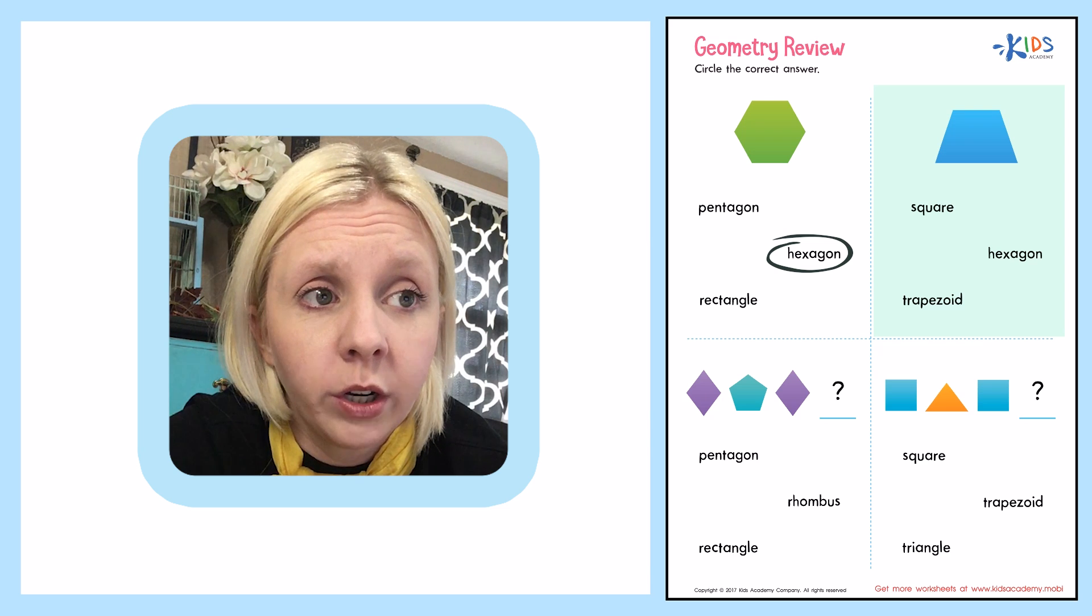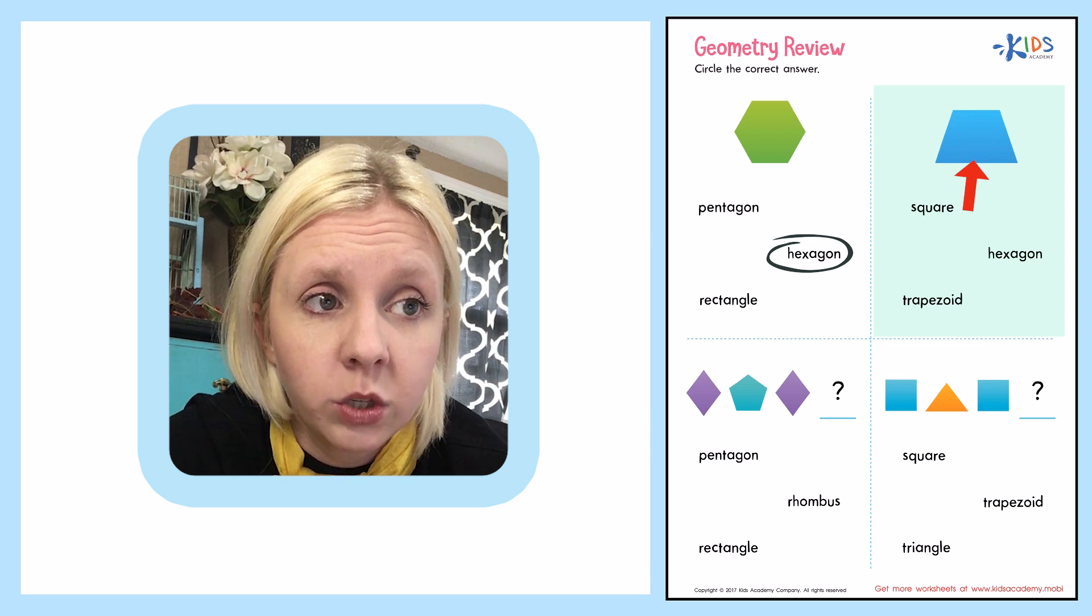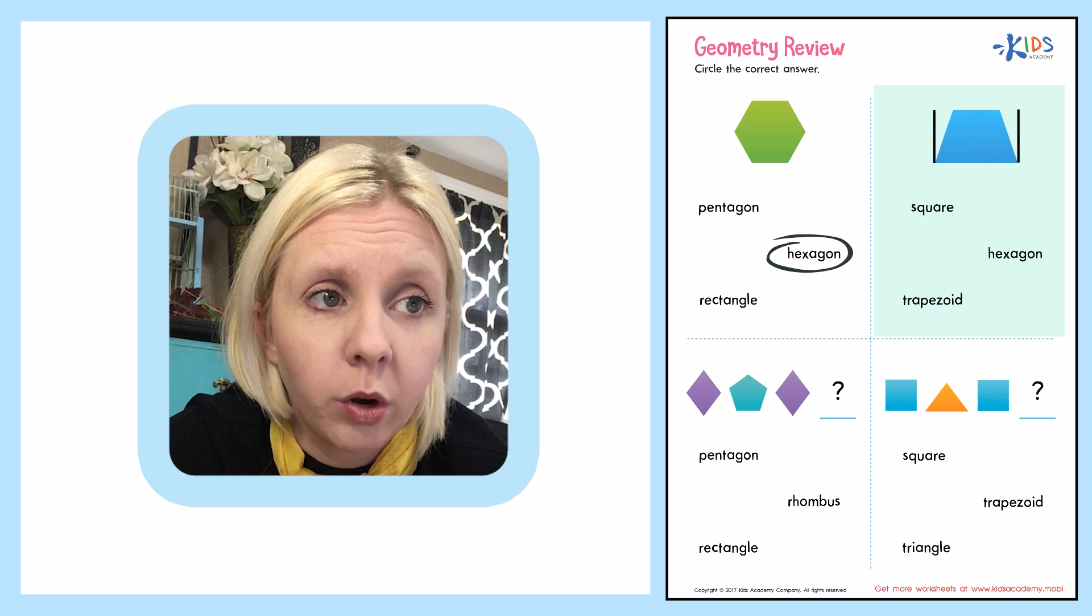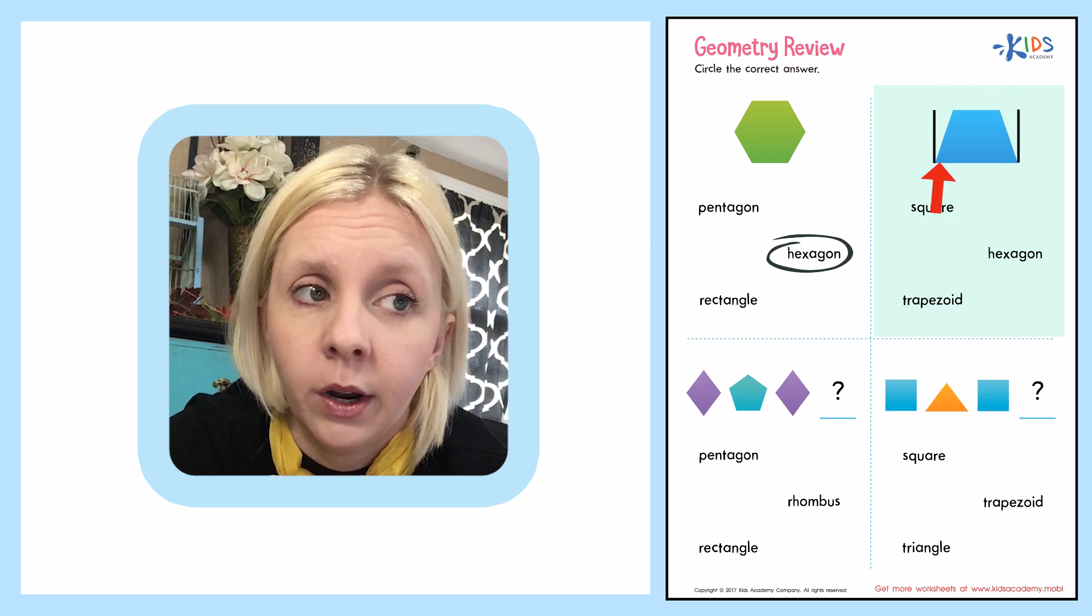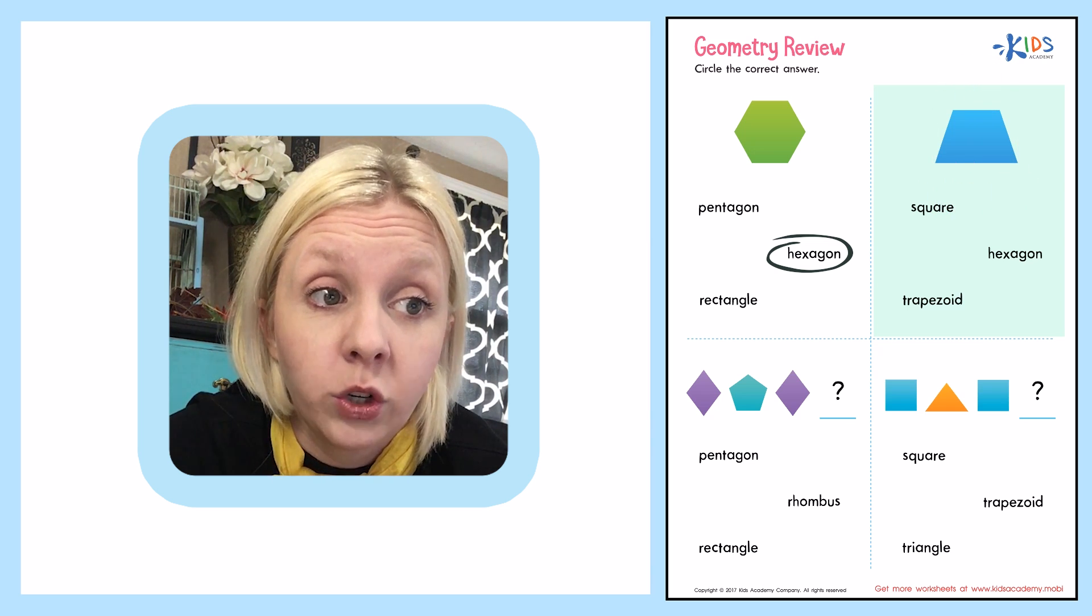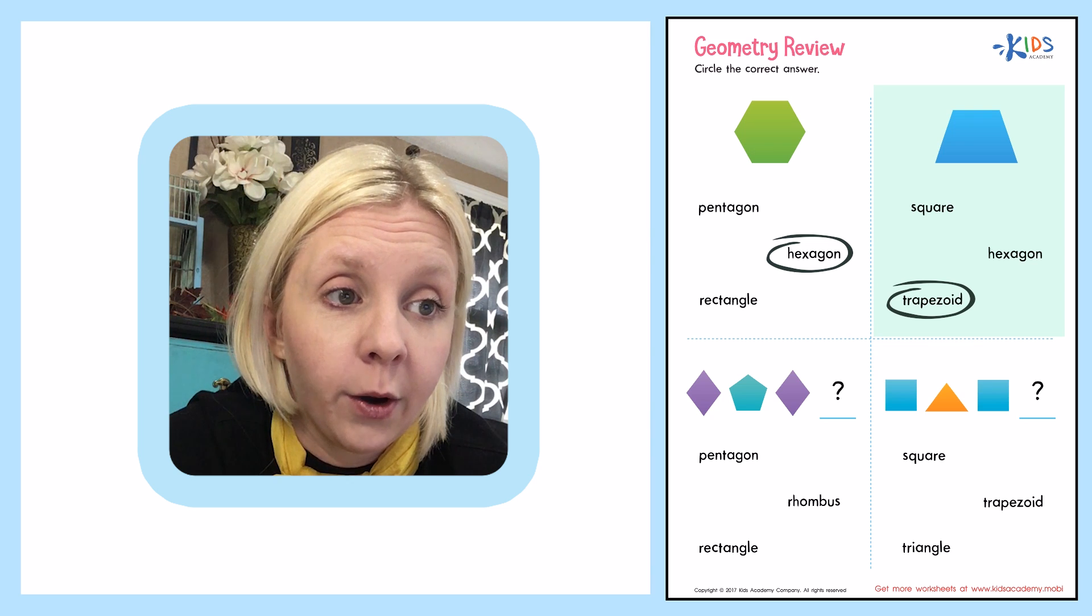So what we're going to do is we're going to look here. This has four sides, so it's a quadrilateral. And what two sides would it have that are parallel? Well, this one right here and this one right here, but these are not. So that is called a trapezoid. We're going to circle that one right here.